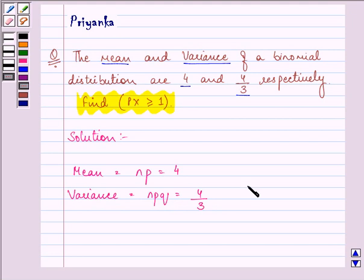Now, if we divide, let this be the first equation, let this be the second equation. If we divide the second equation by the first equation, we will get the value of q.